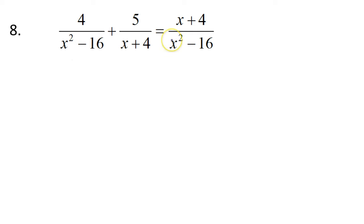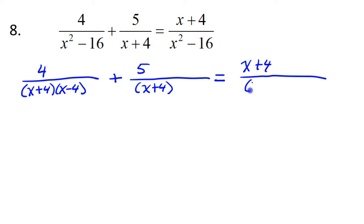Now, it's in our best interest to factor everything that can be factored. So I see the difference of two squares here and here, so I'm going to factor those. So that's going to give me 4 over, and this is going to be x plus 4, x minus 4. So I factored this, and I factored this. This makes it easier to see how many factors I have.